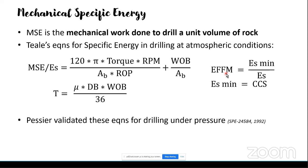Drilling efficiency is never 100%. We have so many energy losses. We'll see going forward what typical drilling efficiency looks like. It can be calculated using the MSE equation — Db is the bit diameter, and you have weight on bit. If you plug in all the numbers, you can calculate the MSE for any given point in time.